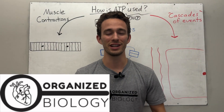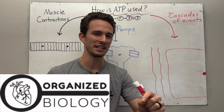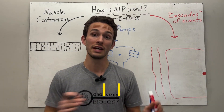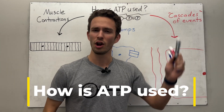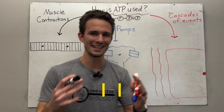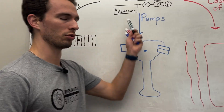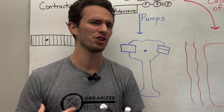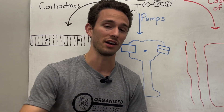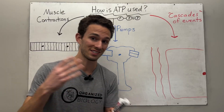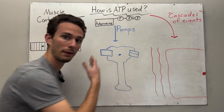Hey everybody, Organized Biology here and today we're talking about how ATP is used. In the previous video, which I will link right here, we discussed what ATP was and we know that it's a molecule that acts as the energy currency for our cells, which are the functional units of our body.